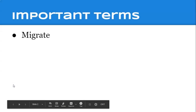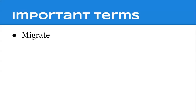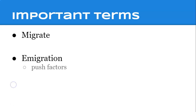First off, some terminology. Migrate just means to move from one location to another. One term is emigration, which is when you leave your country of origin — or maybe you're emigrating from one city to a new city. That's emigration, and it is typically caused by push factors. Push factors are reasons why people decide to leave a place of origin, whether it's a country, city, etc.